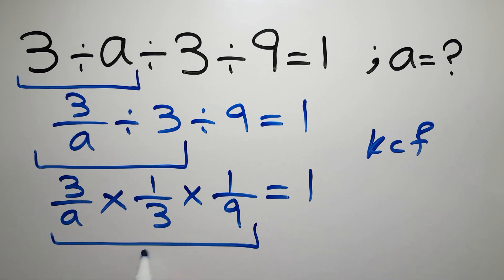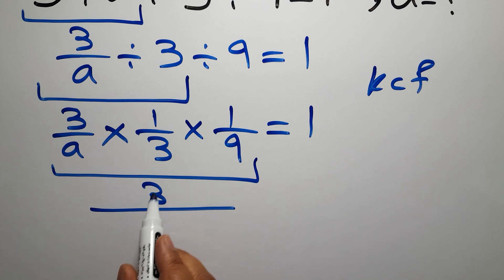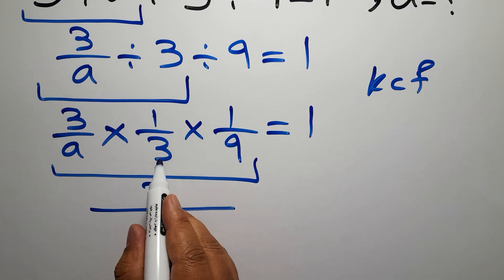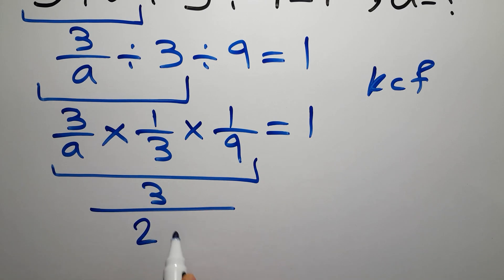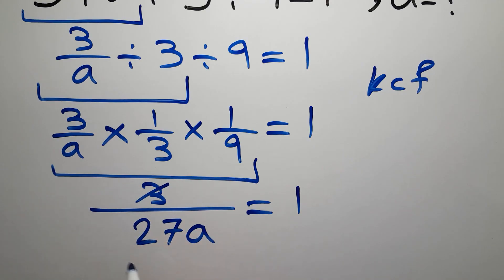So 3 divided by, 3 over a times 3 times 9. 9 times 3 gives us 27, so 27a equals 1. Okay, 3 divided by 3 gives us 1, and 27 divided by 3 gives us 9.